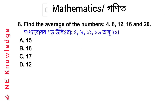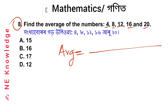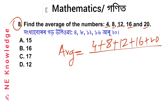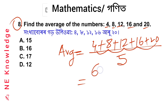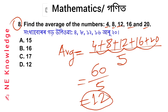Question number 8: Find the average of the numbers 4, 8, 12, 16, and 20. We have 5 numbers. Sum: 4 + 8 = 12, 12 + 12 = 24, 24 + 16 = 40, 40 + 20 = 60. Average = 60 ÷ 5 = 12. Option number D is correct.